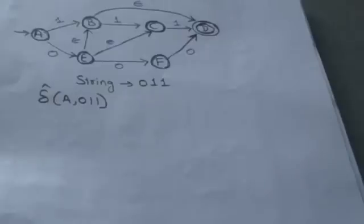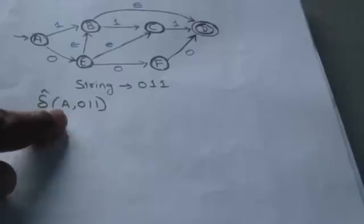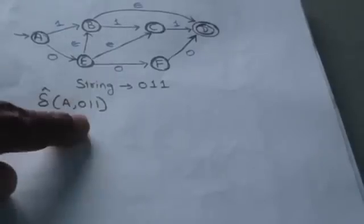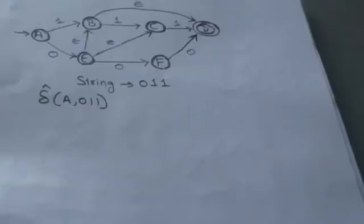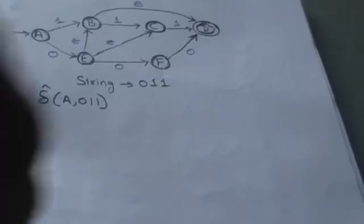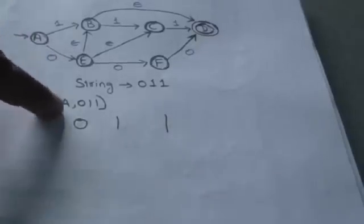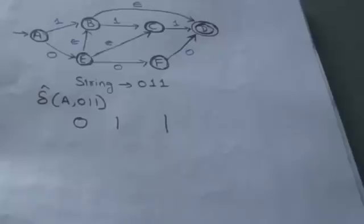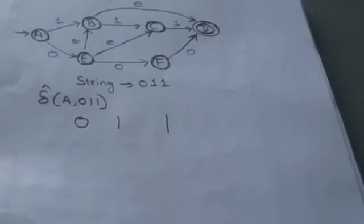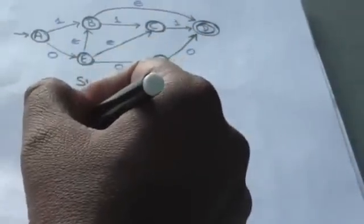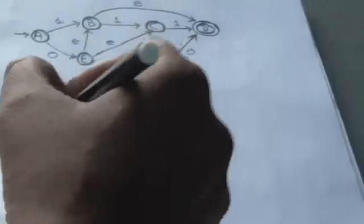We have an NFA with empty moves and we are provided with the string 0 1 1, and we have to find the extended transition from state 'a' for input string 011. First, find the extended transition of 'a' for single input symbol 0. As described earlier, we first find the epsilon closure of 'a'. There is no empty transition from 'a', so its epsilon closure includes only the state 'a'.